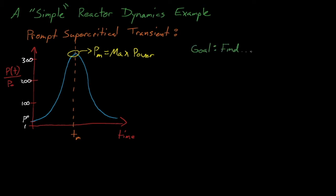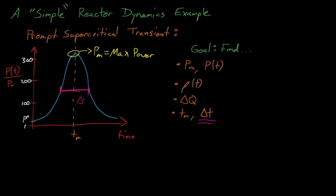In this lecture, we will obtain several quantities. We want to know how high the power spike is and to develop an expression for the power as a function of time. We also want to develop an expression for the reactivity as a function of time and to see how much energy, delta Q, is released. Lastly, we want to understand at what time T_m the system reaches its maximum power, and to solve for delta T, the approximate width of the transient.